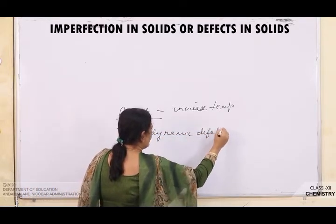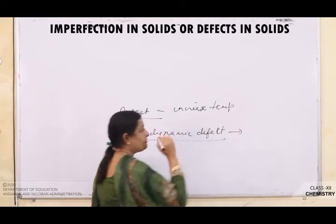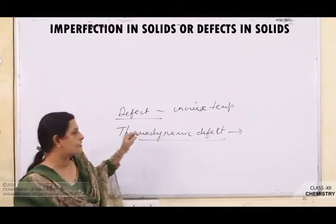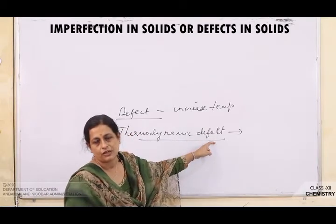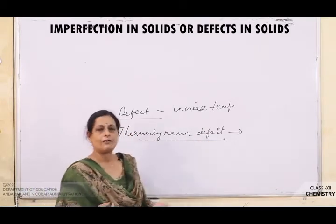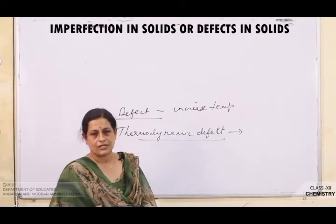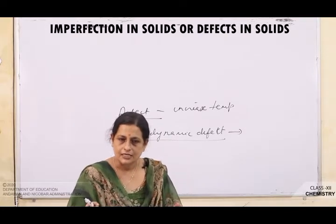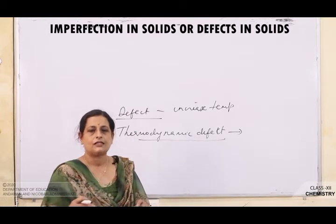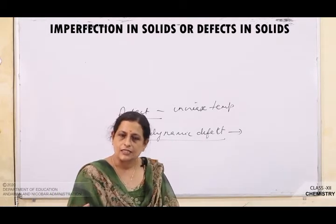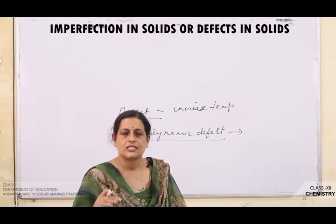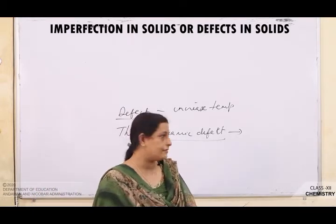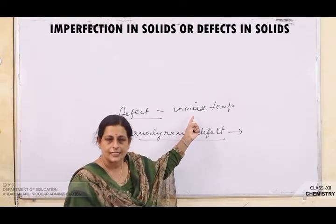Why do we call it a thermodynamic defect? Because the defect arises due to an increase in temperature. That is the reason why imperfection in solids is also known as thermodynamic defect or thermodynamic imperfection — it arises due to increase in temperature. At absolute zero only you get a perfect crystal, because the vibrations are nil.